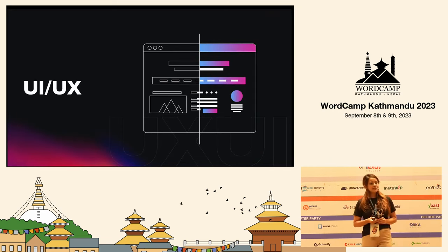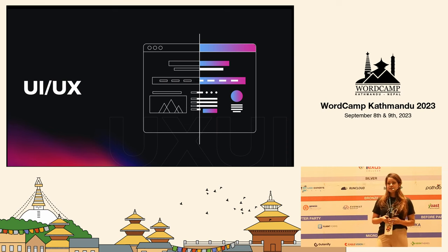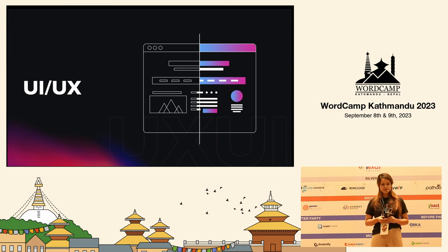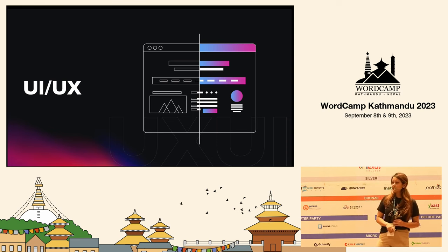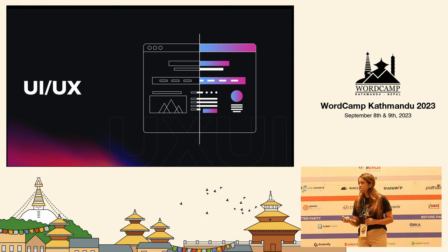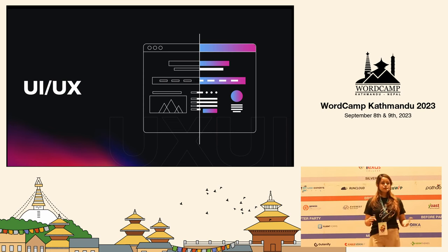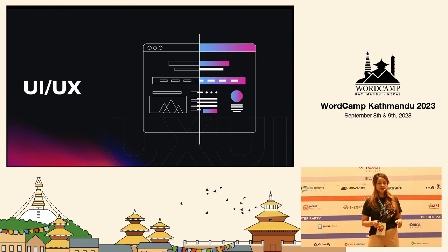Research done at Stanford says that 75% of consumers make judgments about a company's credibility on the basis of its website design. That means the website design of your company should be as carefully planned as the content of your site. There are several key components of enhancing UI and UX designs, and today I'll be specifically talking about six — three each for UX and UI.